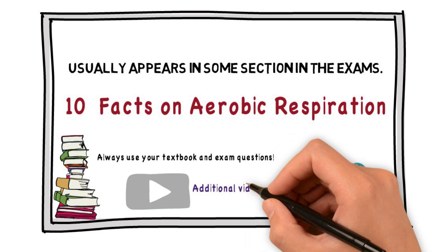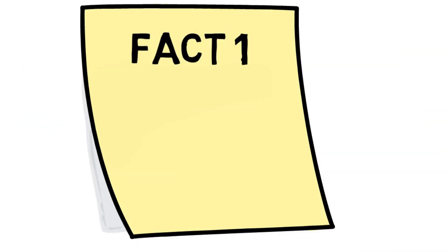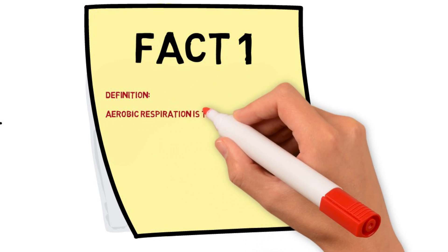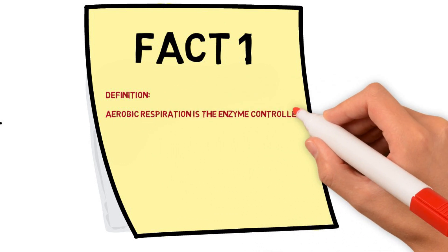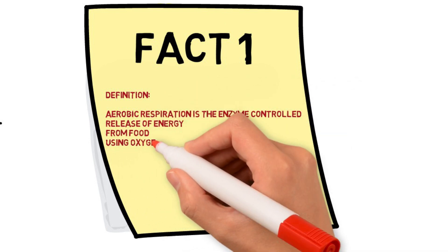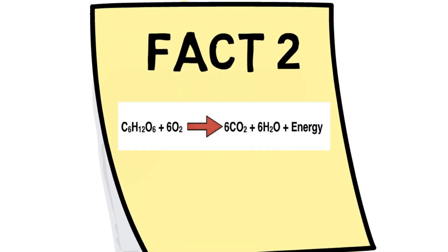Fact number one, the definition: aerobic respiration is the enzyme-controlled release of energy from food using oxygen. Fact number two: there's an equation that you must know and it must be